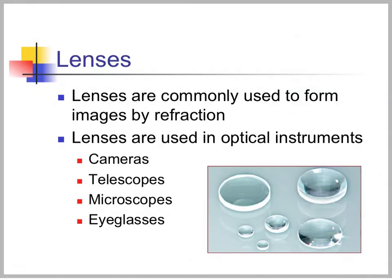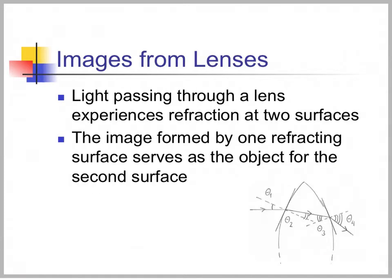Now that we understand image formation, we can start talking about lenses. They are used to form images by refraction and are used in lots of optical instruments like cameras, telescopes, microscopes, or eyeglasses. Light passes through the lens and it experiences refraction at two surfaces.